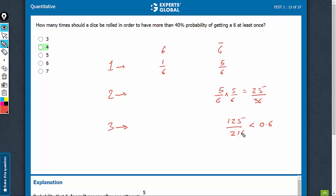See, 21 into 6 is 126. So, this is a bit more than 210 and this is a bit less than 126. So, the ratio is going to be less than 0.6. If this ratio is less than 0.6, this is going to be more than 0.4.